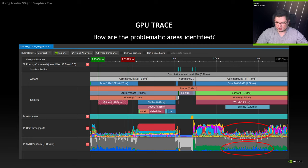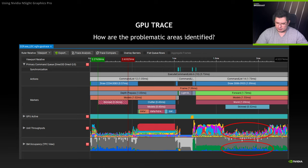Once a GPU trace is captured and you open it, it will look something like this. If you look at the right section, it first starts with high unit throughput, then low unit throughput, and then high again. This suggests that the middle area is causing unit throughput to drop. Looking at SM occupancy, the green indicates pixel warps and the blue indicates vertex warps — pixel warps go down while vertex warps go up, suggesting the problem might lie inside the vertex shader.